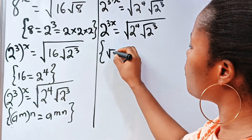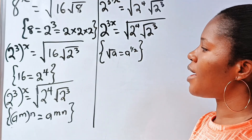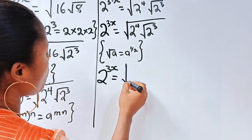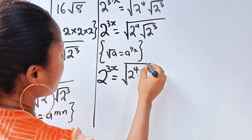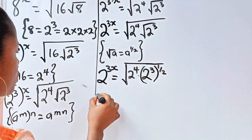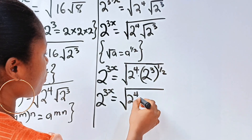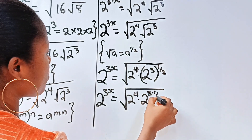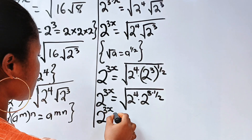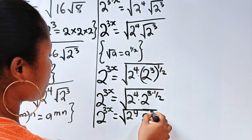Now note that the square root of a is equal to a raised to the power of half. So that means we can write this as 2 to the power of 3x is equal to the square root of 2 to the power of 4, multiplied by 2 to the power of 3, all raised to the power of half. So we have 2 to the power of 3x is equal to 2 to the power of 4 multiplied by 2 to the power of 3 over 2.